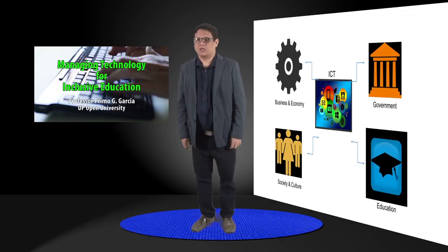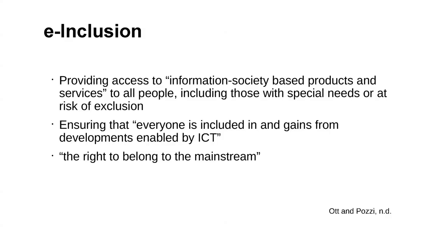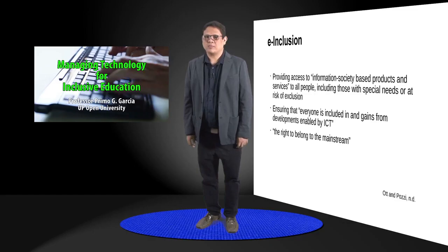In recent years there have been calls to make sure that the benefits of information and communication technologies reach the people. This is what we call e-inclusion. E-inclusion means providing access to information society based products and services to all people, including those with special needs or at risk of exclusion. It ensures that everyone is included in and gains from developments enabled by ICT. It connotes the right to belong to the mainstream.